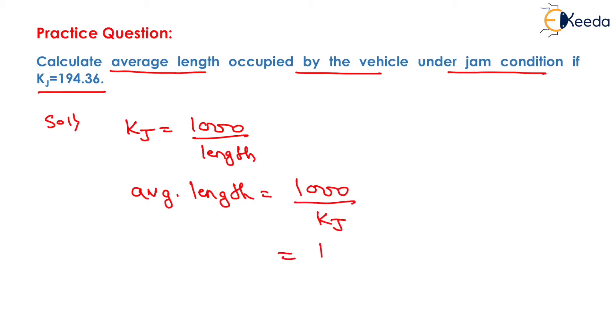On putting the value of KJ as 194.36, we will have the average length occupied by the vehicle equals to 5.145 meter.